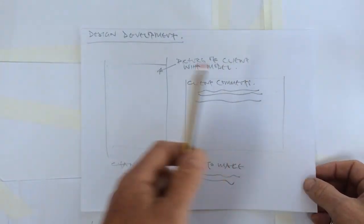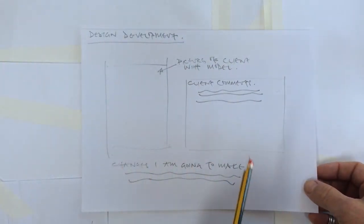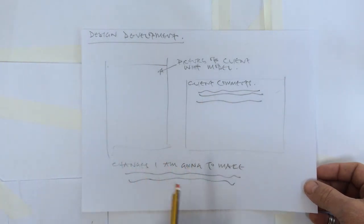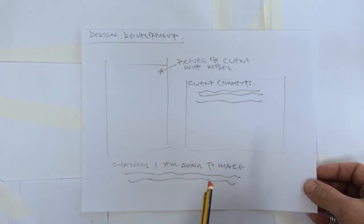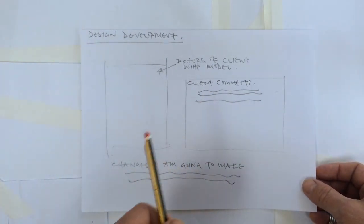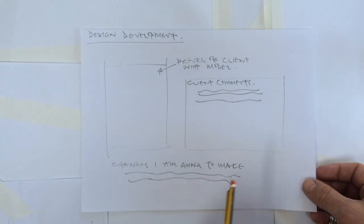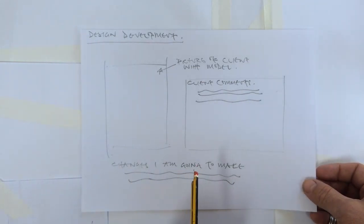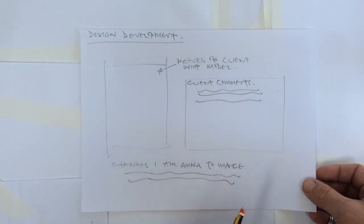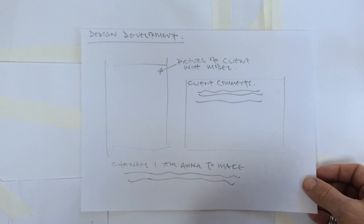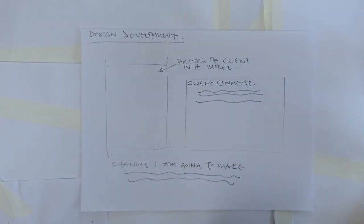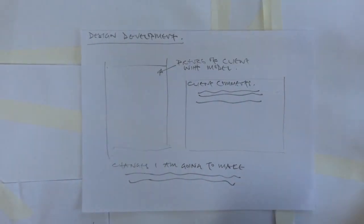So that makes up the final sheet within the design development section. At this point you're ready to move on to the next section, which is final design, where you've been able to pin down exactly what you're going to do.